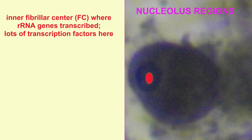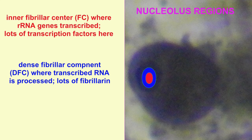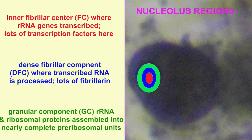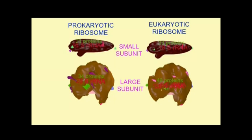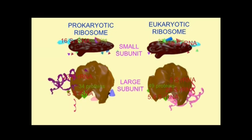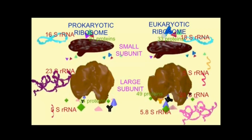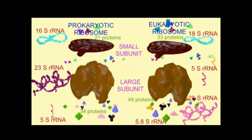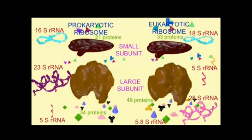The nucleolus forms distinct regions with different protein complements. The central-most region is the fibrillar center, where the DNA genes for ribosomal RNA are transcribed. This is surrounded by the dense fibrillar component, where the rRNA is processed. Finally, the granular component is where ribosomal RNA and ribosomal proteins are compacted together to complete the pre-ribosomal subunits.